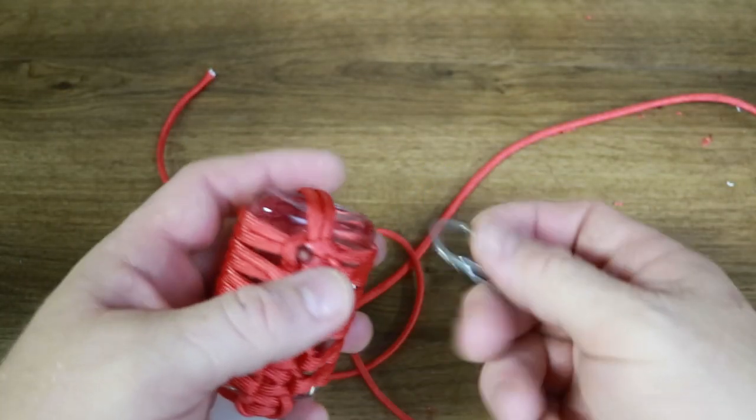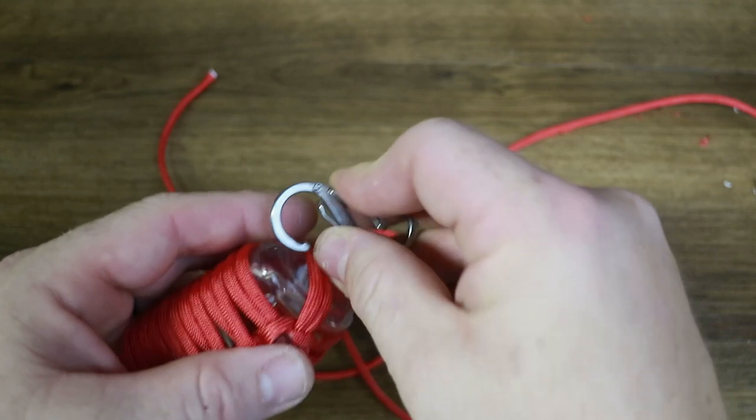Now all that's left to do is attach your carabiner, and boom, you have a paracord germ grenade.